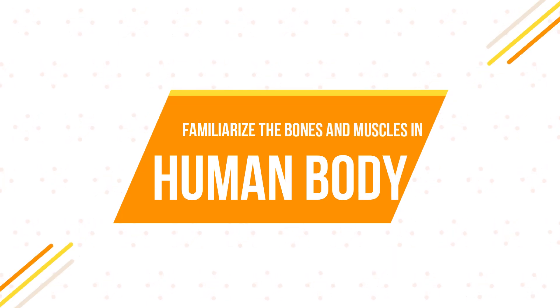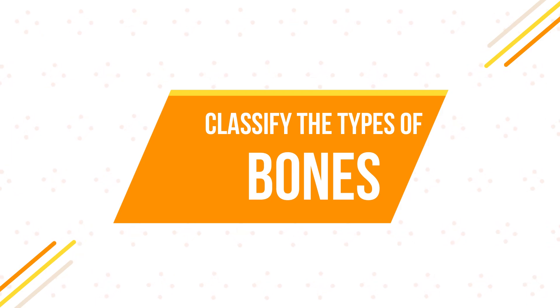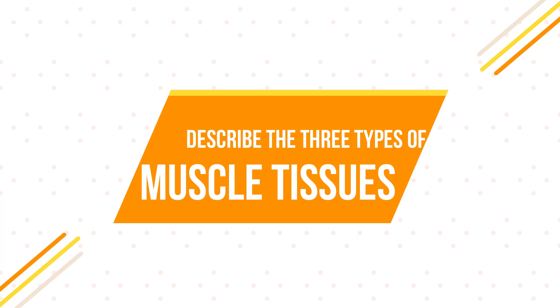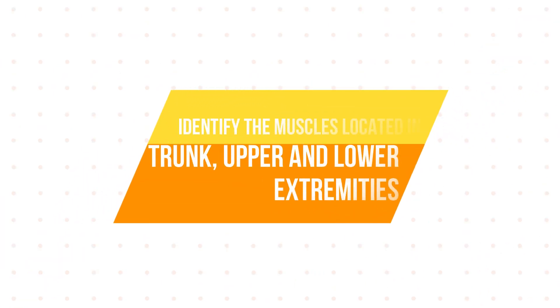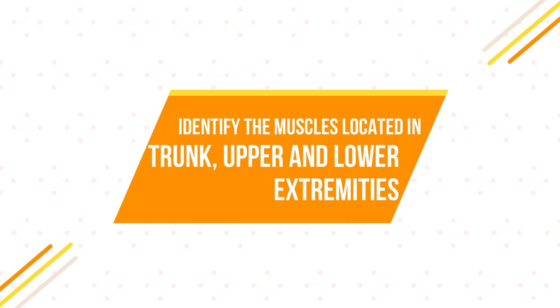This lesson aims to: Number 1, familiarize the bones and muscles in the human body. Number 2, classify the types of bones. Number 3, describe the three types of muscle tissues. Number 4, identify the muscles located in trunk, upper extremity, and in lower extremity.